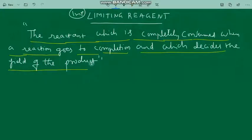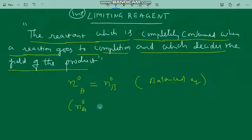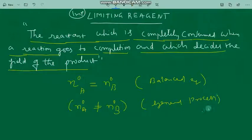In a reaction, the same molar ratio in a balanced equation need not be taken. Usually in a balanced equation, the number of moles of reactant A and the number of moles of reactant B are the same. But in solving problems of limiting reagent, we generally do not go strictly according to the balanced equation.